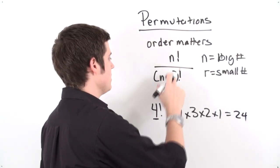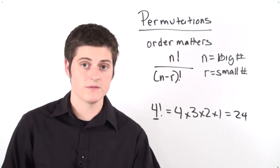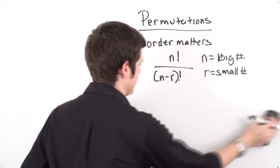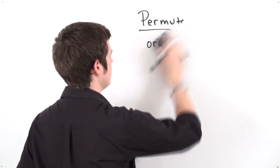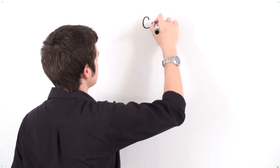Now again, n is going to be the big number and r is going to be the small number when you apply the factorial. So when we deal with permutations where the order will matter, this means that whenever we're dealing with combination type problems, the order is not going to matter.